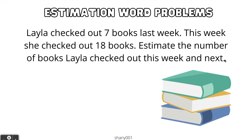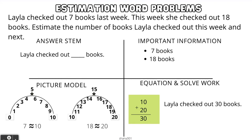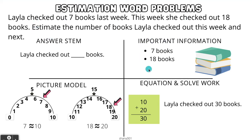Let's go ahead and solve this problem. Layla checked out seven books last week. This week she checked out 18 books. Estimate the number of books Layla checked out this week and last. Our answer stem is: Layla checked out blank books. Our important information is she checked out seven books last week and 18 books this week. Because it says 'estimate,' we are going to round these numbers first.